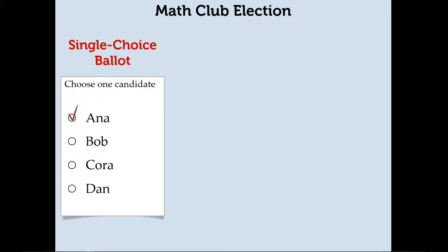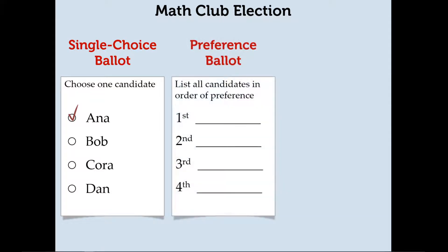There are more complicated ballots. There is something called a preference ballot, and this is the ballot that throughout the entire chapter we're going to be looking at most often. A preference ballot tells you to list your favorite candidates from first to last — from most favorite to least favorite. So in this case with four candidates, let's say this particular voter said they like Dan the most, followed by Bob, followed by Cora, and then Anna.